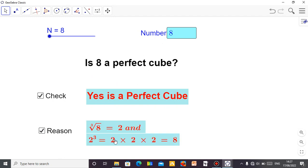And if you check the reason here, you will see that 2 raised to power 3, which is 2 times 2 times 2, equals 8. So that means 8 is a perfect cube or a cube number.